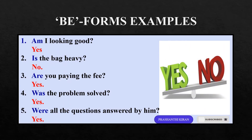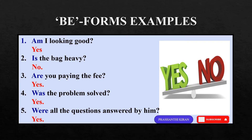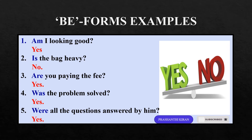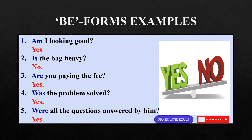Let us see the be forms used as question words. When we use the be forms or the auxiliary verbs as question words, we have to use them in the beginning of the sentence. Examples: Am I looking good? Is the bag heavy? Are you paying the fee? Was the problem solved? Were all the questions answered by him?